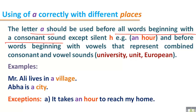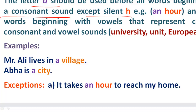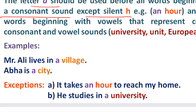But there are exceptions. As mentioned, except for silent h — if a word begins with h but the h is silent, then we use 'an' instead of 'a'. Example: 'It takes an hour to reach my home.' The h in 'hour' is silent, so we consider the word begins with 'o' and put 'an' before it. Another example: 'He studies in a university' — it is a vowel sound, so we use 'a' instead of 'an'.